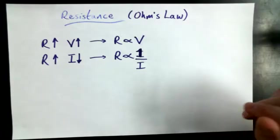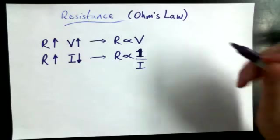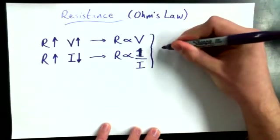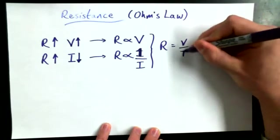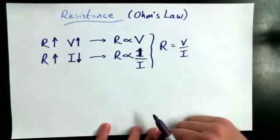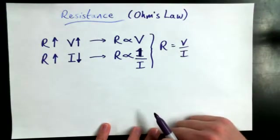There's no constant. There's none of these, like, you know, a fudge factor, if you will. Turns out the resistance is plain and simple just equal to the voltage divided by the current. The electric potential divided by the current.